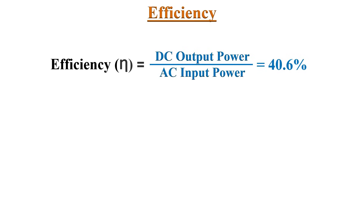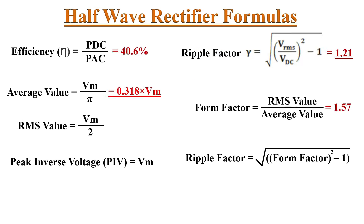The next parameter of the half-wave rectifier is efficiency. Efficiency defines how efficiently the AC input power is converted into DC output power. The efficiency of the half-wave rectifier is 40.6%, meaning that from the input AC power only 40.6% is converted into output DC power. These are the performance parameters of the half-wave rectifier; these parameters can be improved by using a full-wave rectifier.